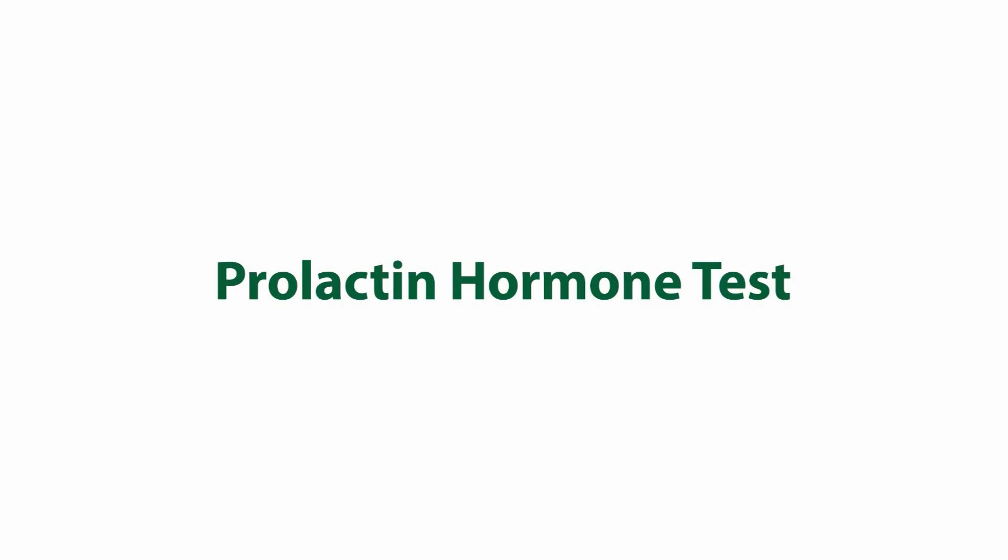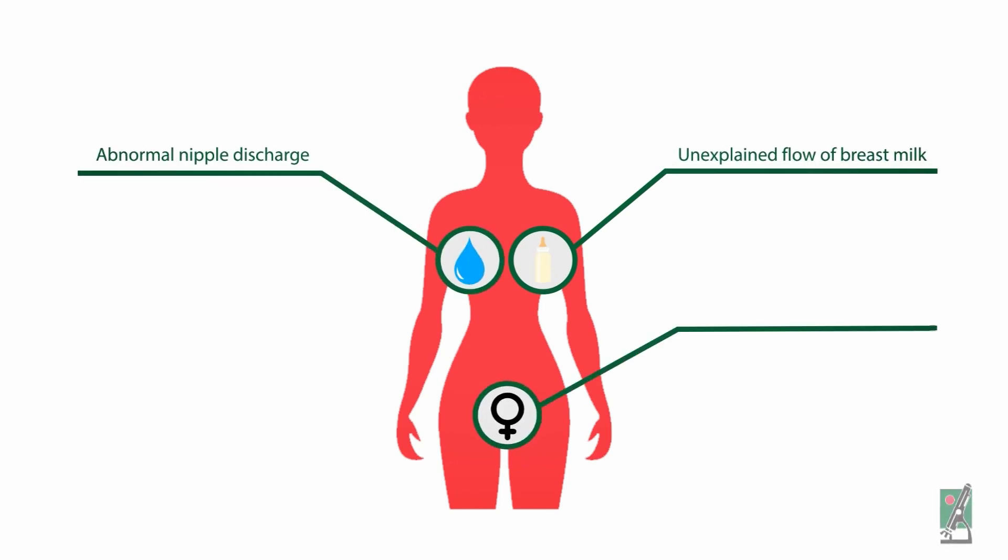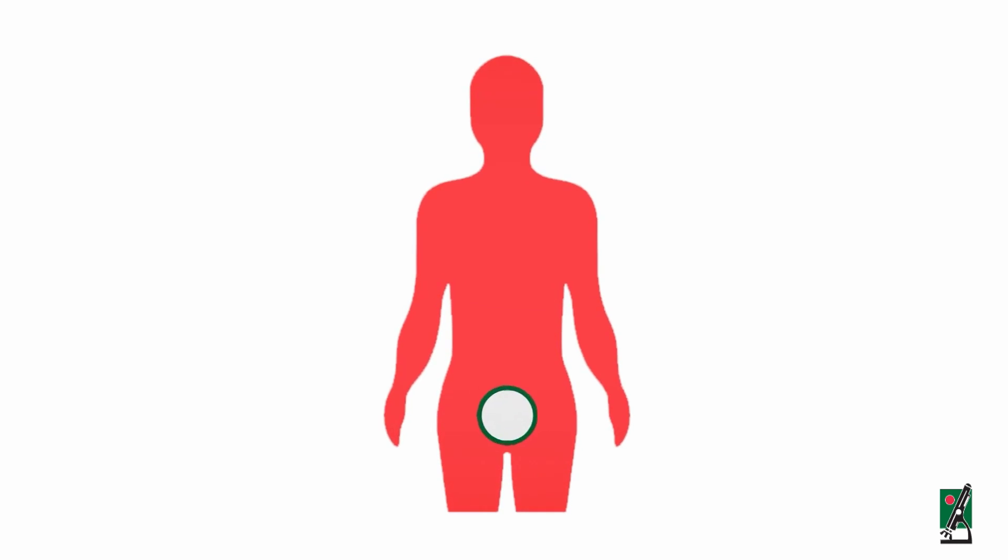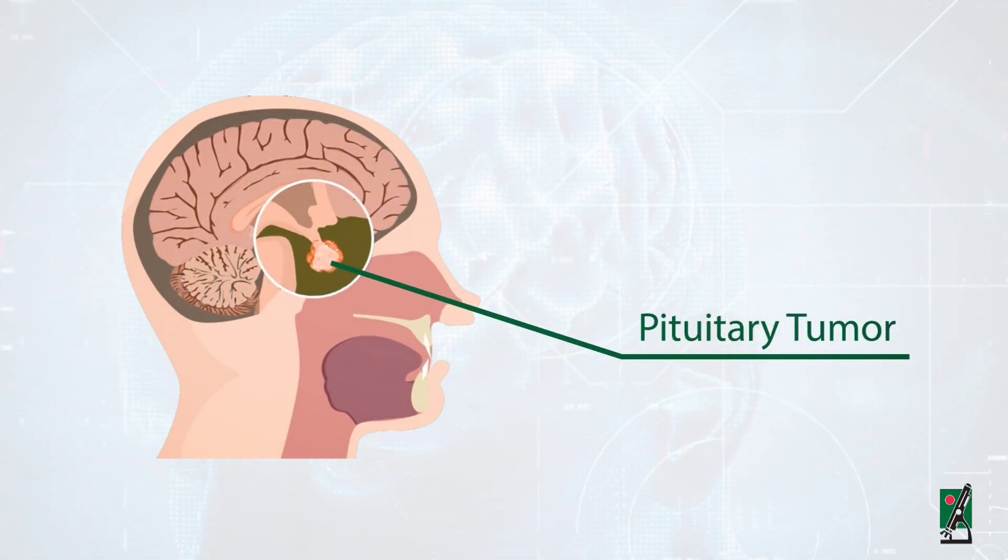Prolactin hormone test. This test is performed to help investigate unexplained flow of breast milk, abnormal nipple discharge, absence of menstrual periods, or infertility in women. In men, it helps diagnose the cause of decreased libido or erectile dysfunction, and to detect and monitor a pituitary tumor that produces prolactin.